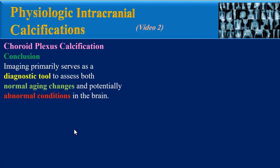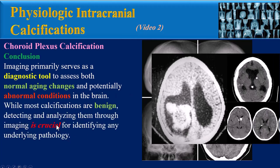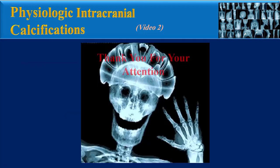In conclusion, imaging primarily serves as a diagnostic tool to assess both normal aging changes and potentially abnormal conditions in the brain. While most calcifications are benign, detecting and analyzing them through imaging is crucial for identifying any underlying pathology. I suggest two other videos of mine that are related to this topic, and thank you for your attention.